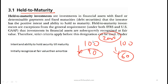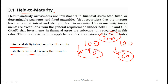To classify an asset as held to maturity, there must be both the intent and the ability to hold the security until maturity. If you keep marking assets as held to maturity but sell them before maturity, the regulator should come after you. The accounting treatment is to initially recognize the asset at fair value at purchase, then simply amortize the asset over its life.